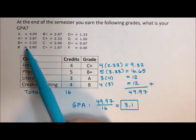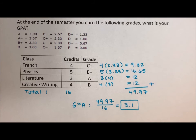So if we look up here, 3.1 is just about a B average for the semester.